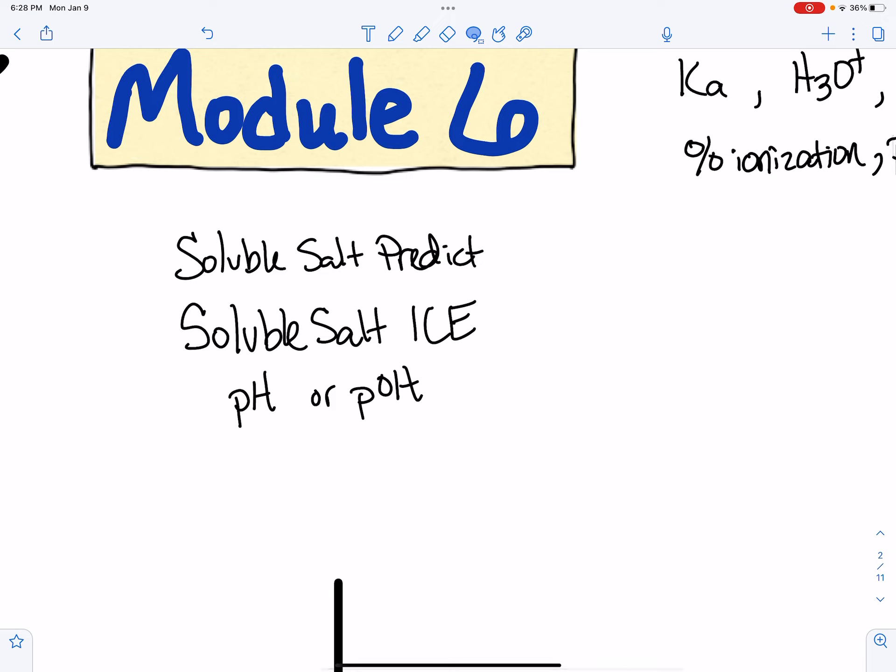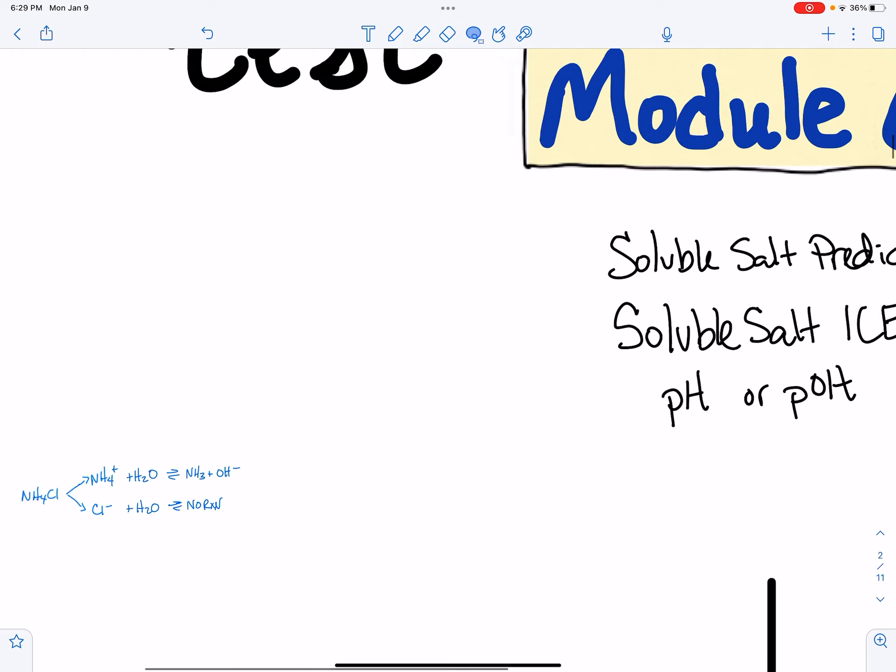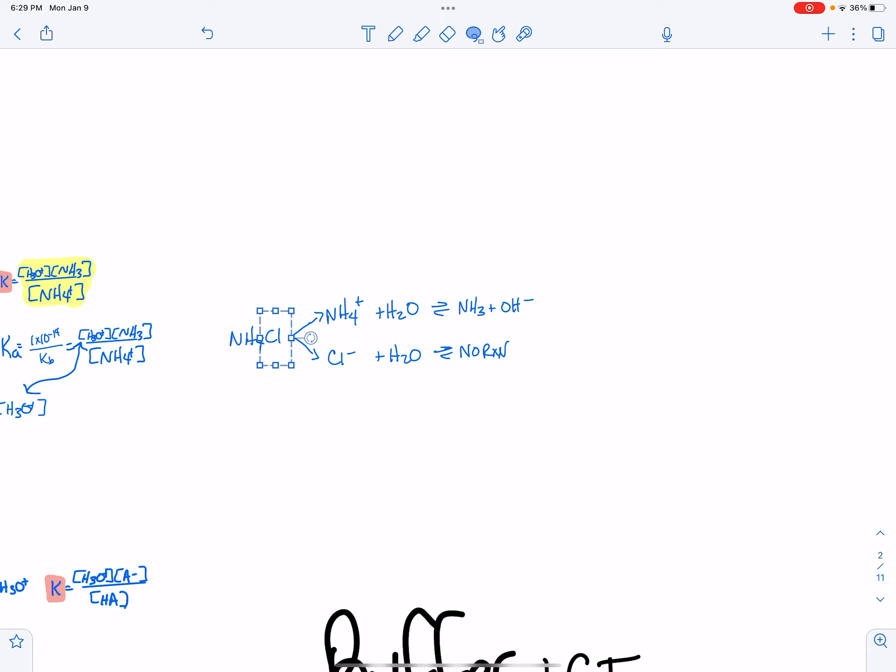Then you have soluble salt predictions. Yes, there will be insoluble salts later on week after or next week, but at the very end. But soluble salts, you're going to be predicting if it's an acid or a base pH, and then you'll actually be using an ice chart. So these ones right here, when you're predicting, it's just basically saying a salt has a positive part and a negative part. And so if you react the positive part with water, does it make something that might stick together?